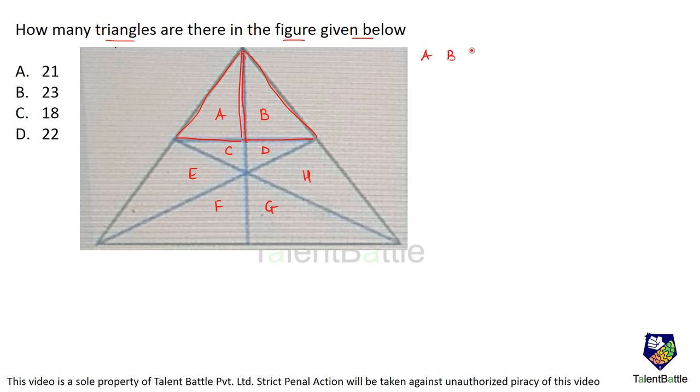Single small triangles: A, B, C, D, E, F, G, and H. These are eight small triangles.